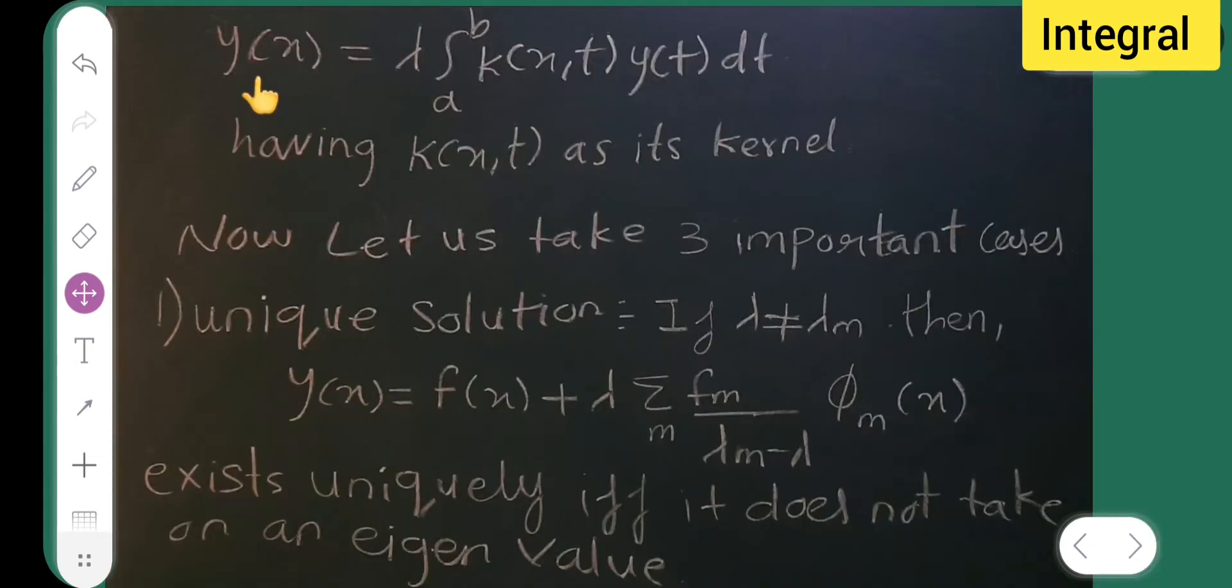Next is y of x is equal to lambda integral from a to b k of x, t y of t dt. And this is having k of x, t as its kernel.